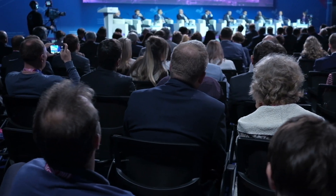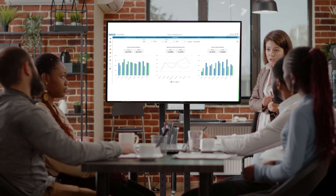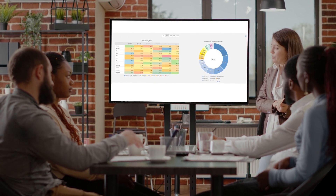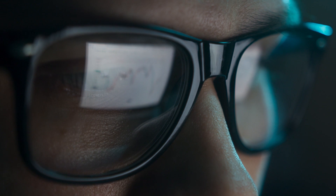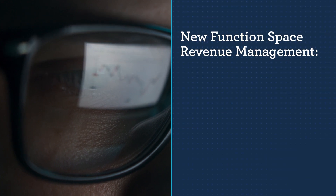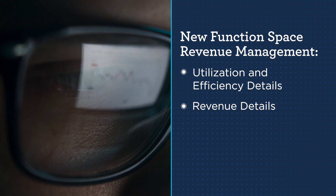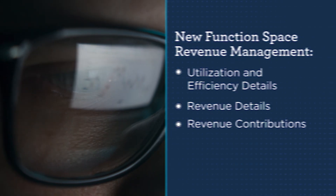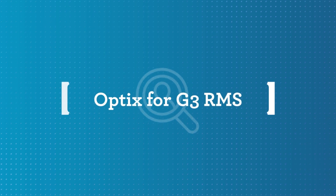With demand for meetings and events stronger than ever, improvements have been made to the function space revenue management tool within G3 RMS to support more informed decision making. The new dashboard provides quick insights into trends and patterns related to the function space business, which is imperative for budgeting and identifying areas for strategy improvement. Users can drill down to explore data in areas such as function space utilization and efficiency, revenue by market segment, function room and revenue stream, and revenue contribution by market segment, day of week, and revenue stream.